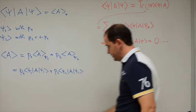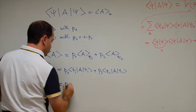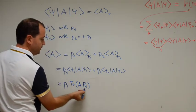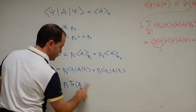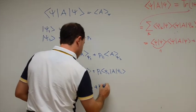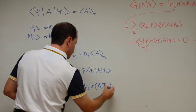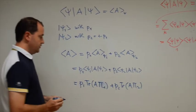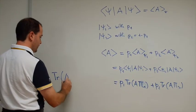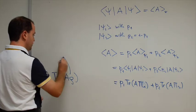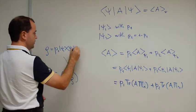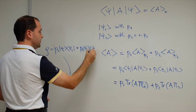Going back, I can now write the expectation value as P1 times the trace of A times the projector Pi1, plus P2 times the trace of A times Pi2. Since the trace is linear, we can rearrange this as the trace of A times rho, where rho equals P1 |Psi1><Psi1| plus P2 |Psi2><Psi2|.